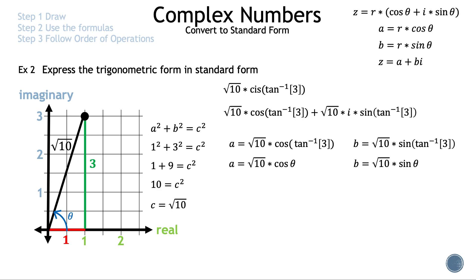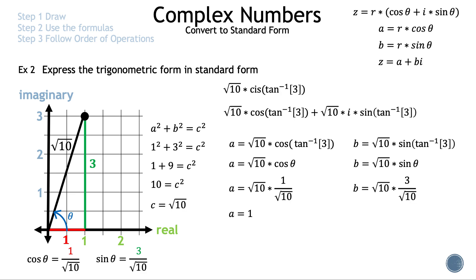Now we find cos θ and sin θ. We don't know the exact value of θ, but using the right triangle and SOHCAHTOA: cos θ = 1/√10, so a = √10 × (1/√10) = 1. And sin θ = 3/√10, so b = √10 × (3/√10) = 3. Since we want standard form, z = a + bi — substituting gives z = 1 + 3i. That is example 2.